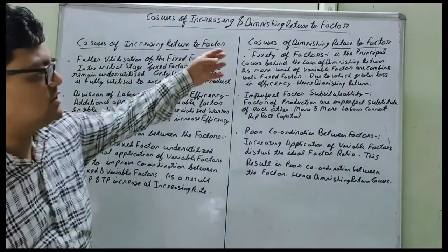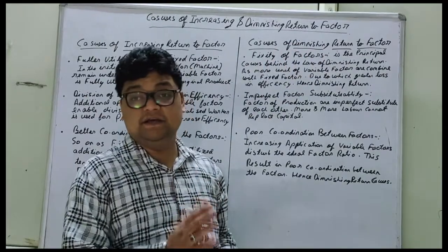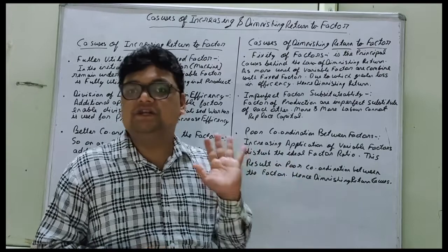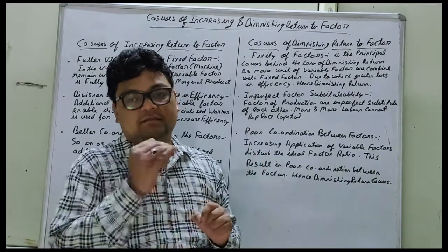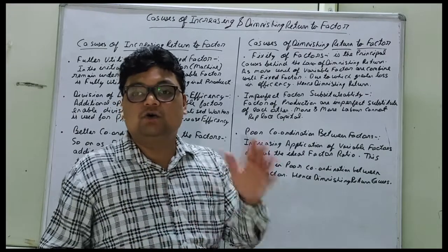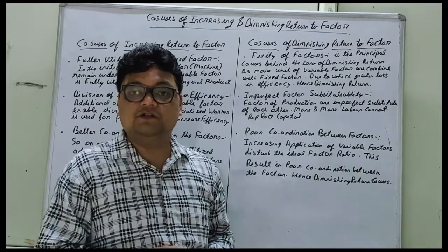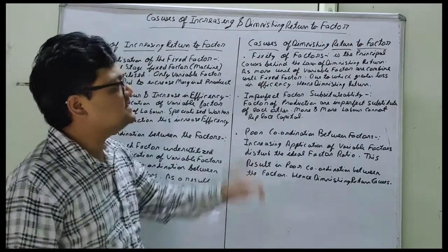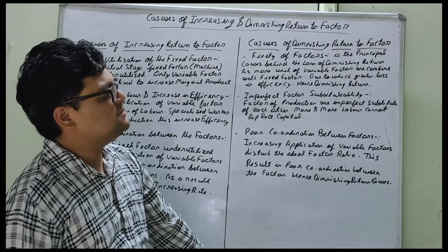Now we are going to discuss the causes of diminishing return to factor. Diminishing return means when marginal product is going to decline and total product increases at a diminishing rate. There will be a position when marginal product becomes zero and then negative. When it becomes negative, total product will start to decline, as discussed in the previous portion.